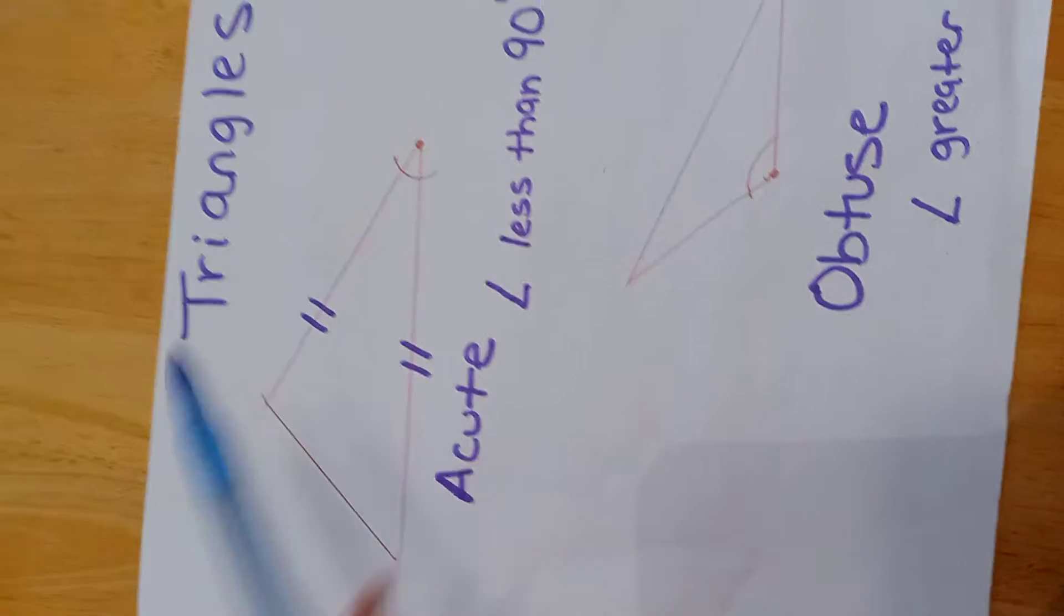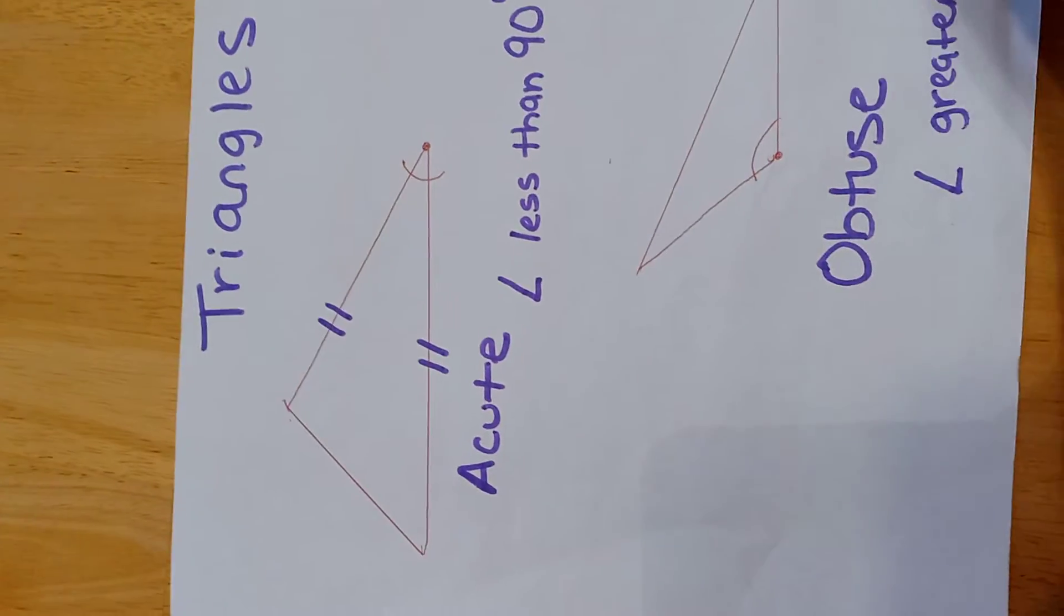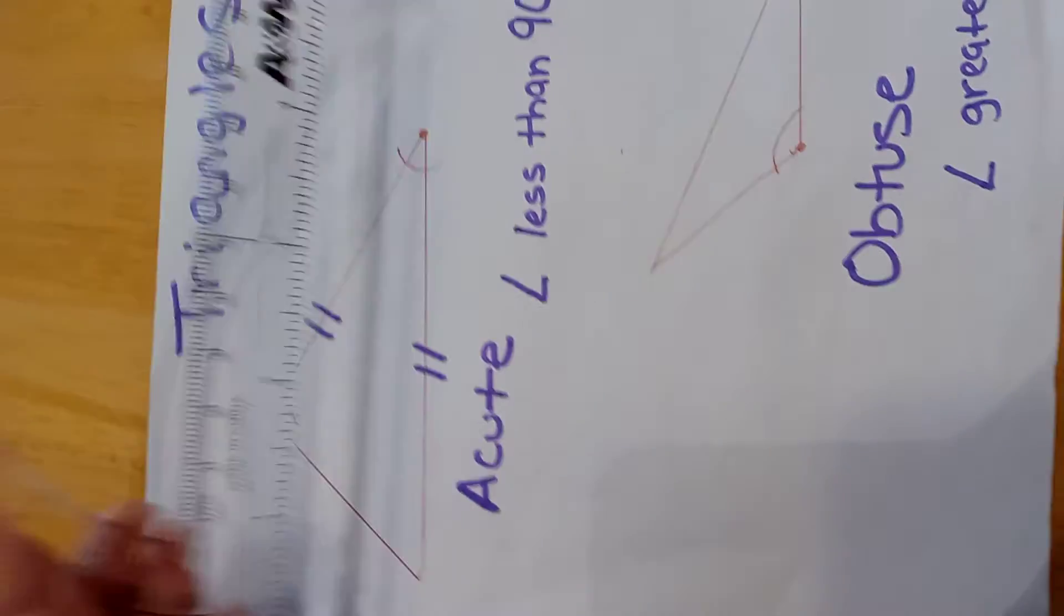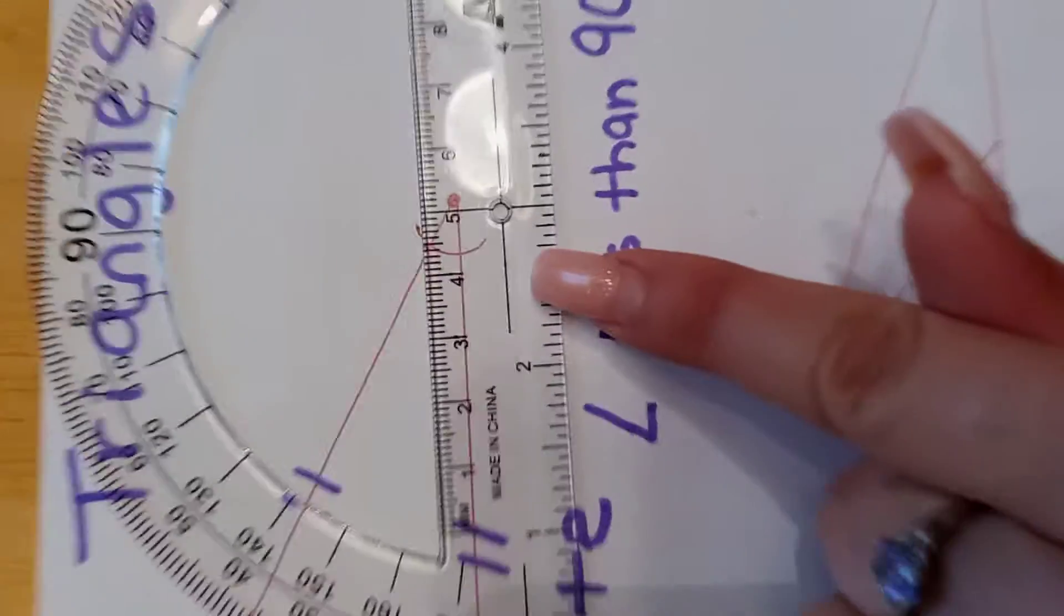An acute triangle is when the angle is less than 90 degrees. Let me show you how we are going to find the degree of this angle. We're going to get a protractor and align these lines right here to the line that's right here. You center it.